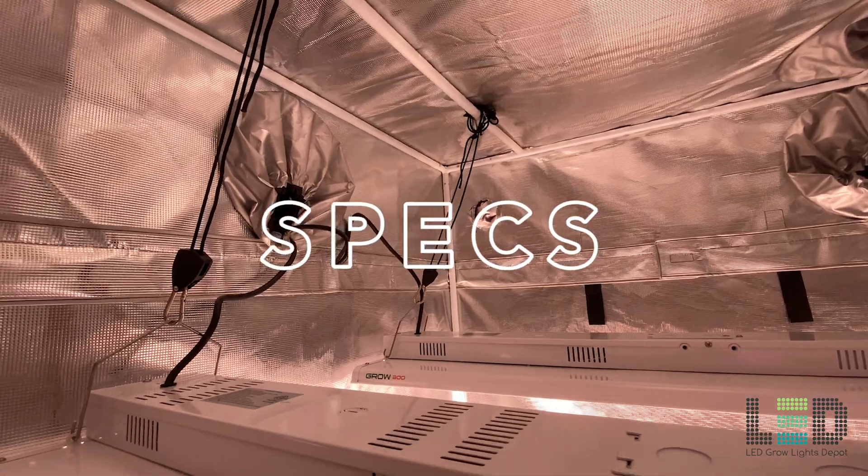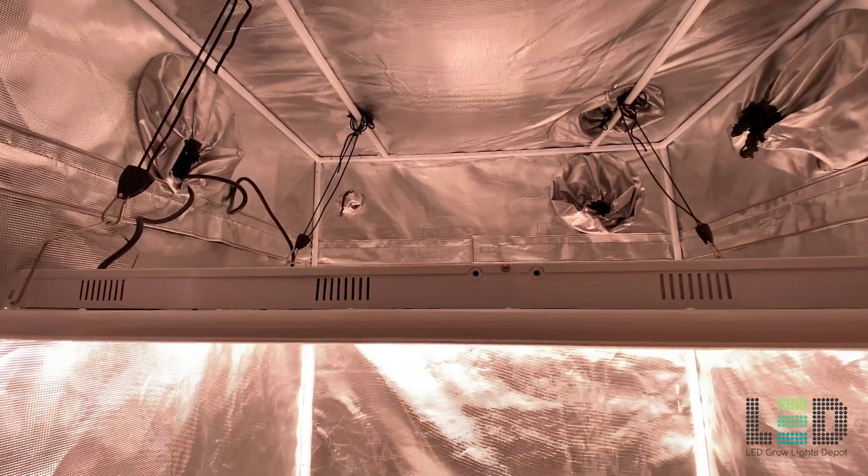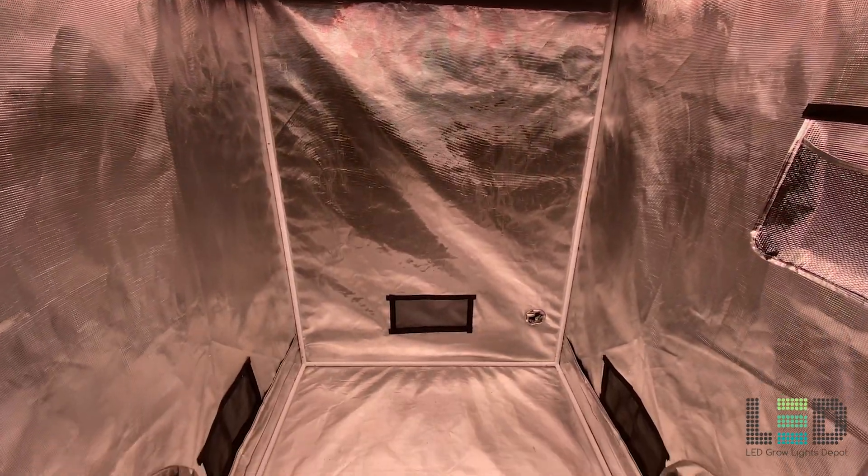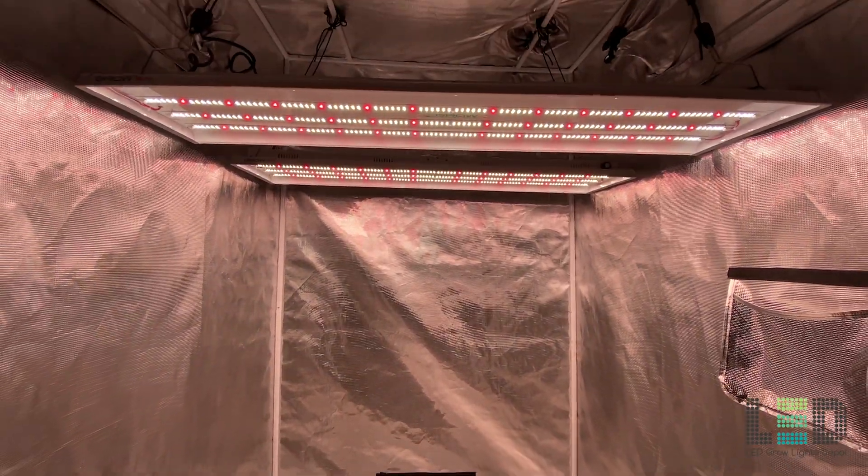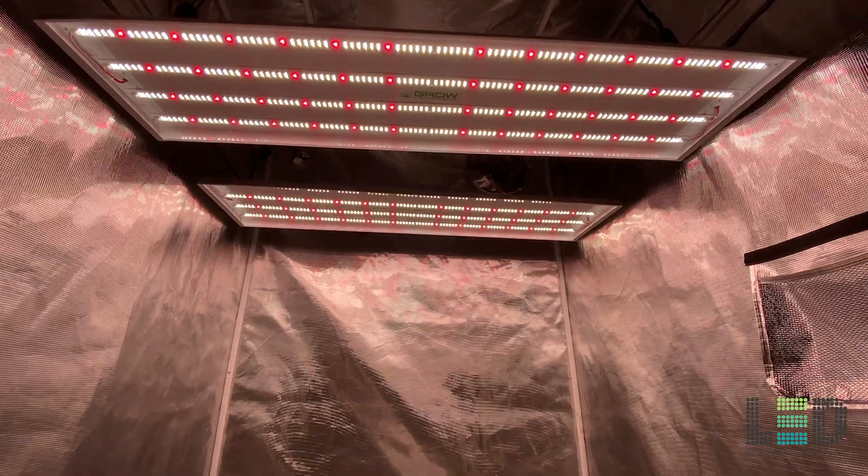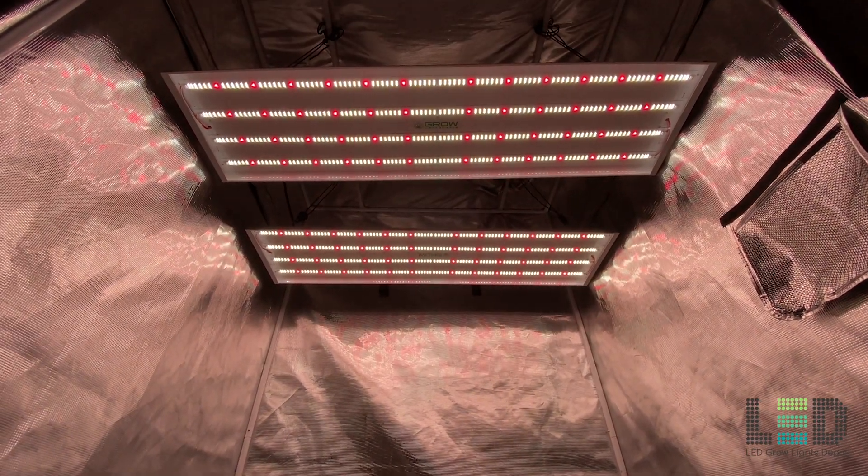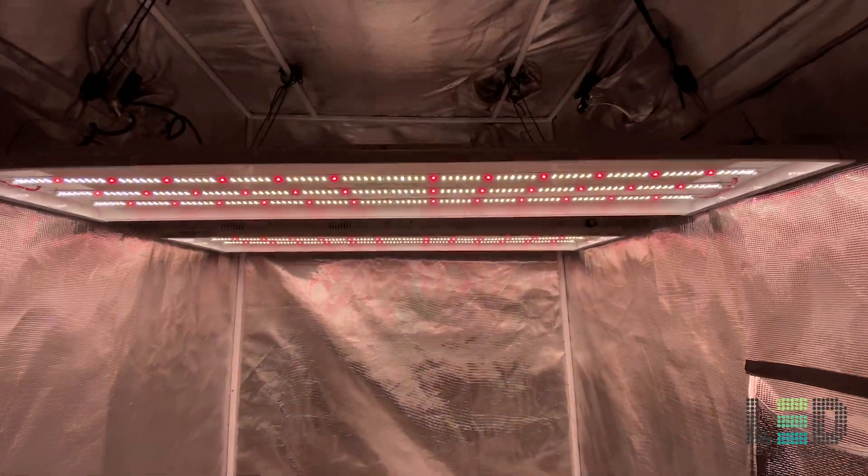The total light output of the fixture is 884 micromoles per second with a par efficacy of 2.75 micromoles per joule as measured in an integrating sphere. A single Grow 300 will cover a 2x4 to 2.5x5 foot area for flowering. Two lights will cover a 4x4 to 5x5 area for flowering. The lights should be hung 12 to 18 inches above the canopy during flowering for the best results.